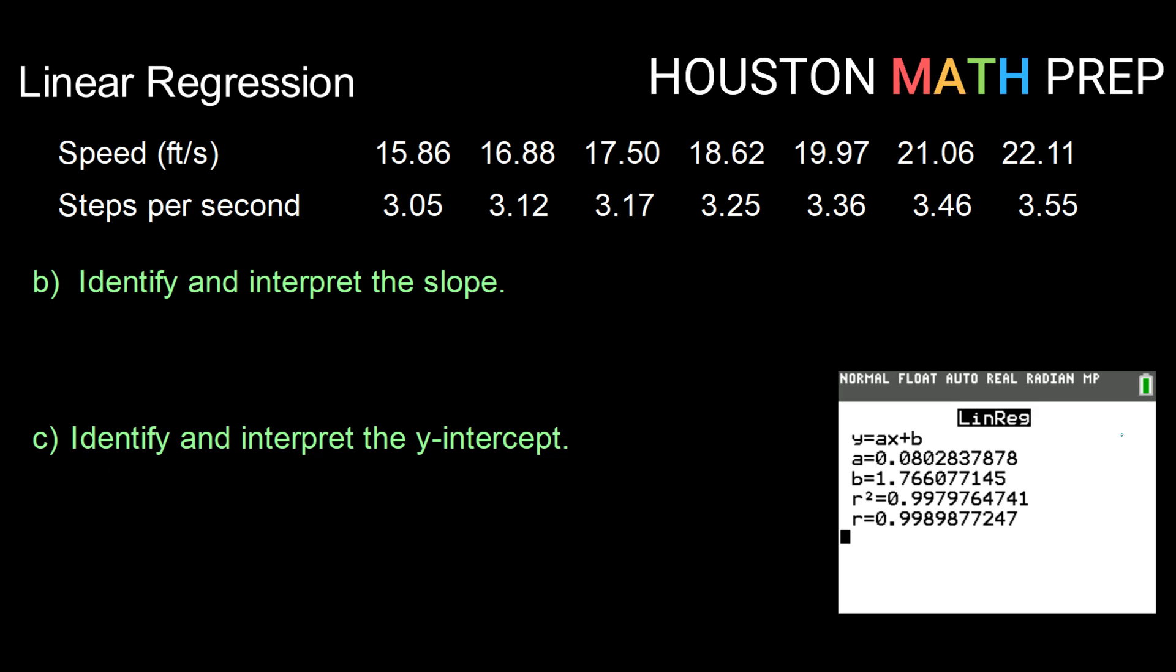So when you run a linear regression, there are two actual choices on a TI-83 or 84. It doesn't matter which one you use. Just keep track of if you're using the y equals ax plus b or the y equals a plus bx. It won't give you different numbers. It will just determine which one is which. Which one is going to be your slope? Which one is going to be your y-intercept? So as long as you know which one you're using, you can answer the following questions.